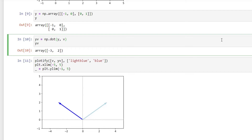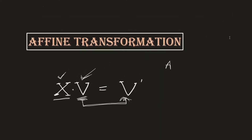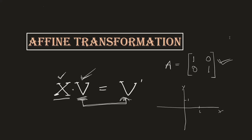Now we're clear on affine transformation with respect to a vector. Let's move further and understand affine transformation with respect to a matrix. Consider a matrix A with four elements, created as a combination of a basis vector. If you plot this 2x2 matrix, it represents a square surface area — just like a photo frame.